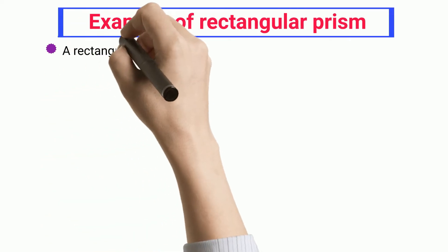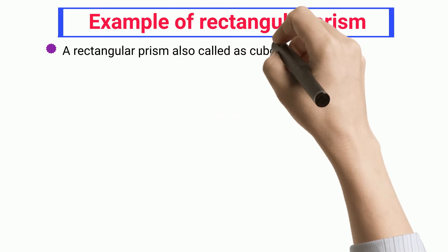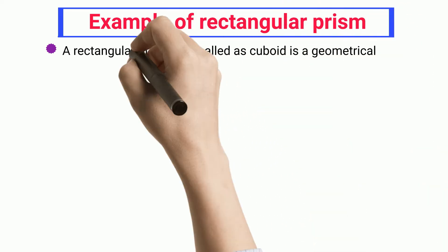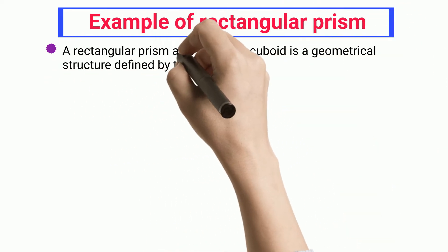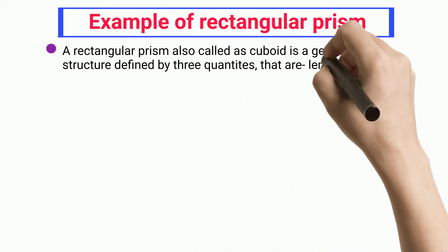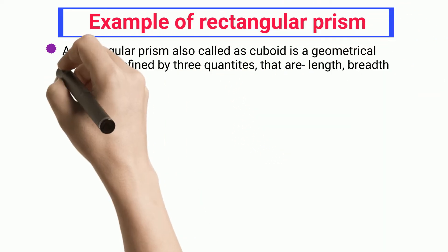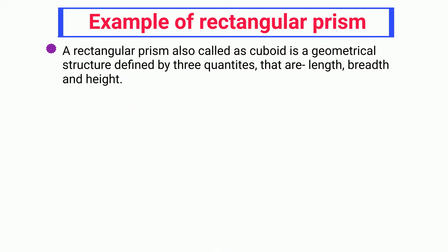Example of rectangular prism. A rectangular prism, also called a cuboid, is a geometrical structure defined by three quantities: length, breadth, and height.